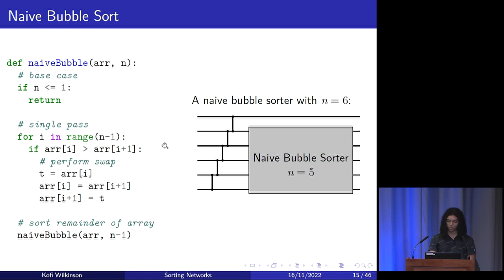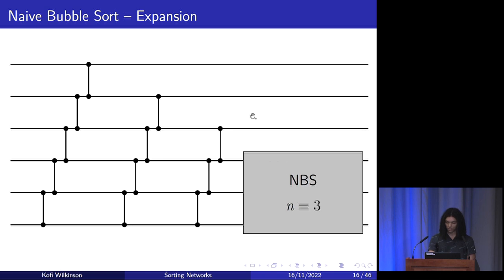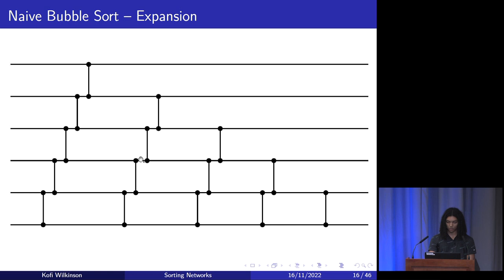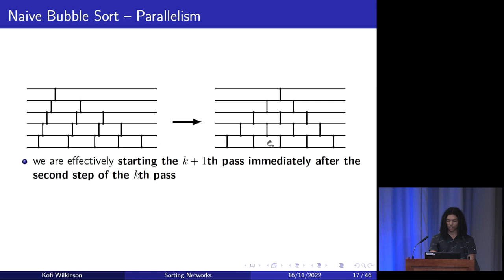We can turn this code into a sorting network, which for n = 6 looks like this. Here's our first pass: we compare value 0 with value 1, then 1 with 2, 2 with 3, and so on. If we unroll the recursive definition, we end up with a network consisting of first, second, third, fourth, and final passes. We can redraw this network to reveal clear parallelism — all we've done is slide the comparators along, so it's still a valid bubble sort network. What's happening is we effectively start the (k+1)th pass immediately after the second step of the kth pass, because there are no data conflicts between the passes.